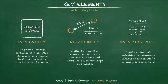Starting from the left of the screen: documents and vertices are the primary storage container of data. Each vertex and document are also referred to as a record. Terminology differs depending on whether you are referring to a document store or graph database. A vertex is a term to describe a data container or node in a graph of data. Edges and links are the relationships in OrientDB. Links are direct pointers to another document, while an edge is a graph concept representing a direct relationship between two vertices.